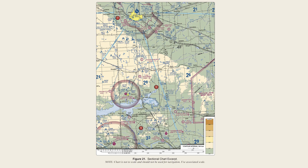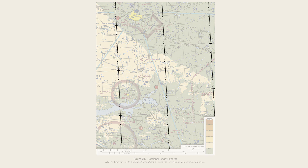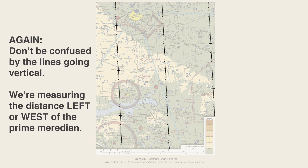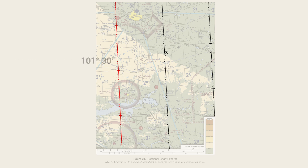Now that we have our latitude, we need to get our longitude — it's calculated the exact same way, except we do it horizontally. Remember, we're in the western hemisphere, so we're measuring west of the prime meridian and the numbers count up as we move left. Looking at the vertical lines on the sectional, we can find 101 degrees on one line. Every other line is a degree, so the next line to the left is 101 degrees 30 minutes.